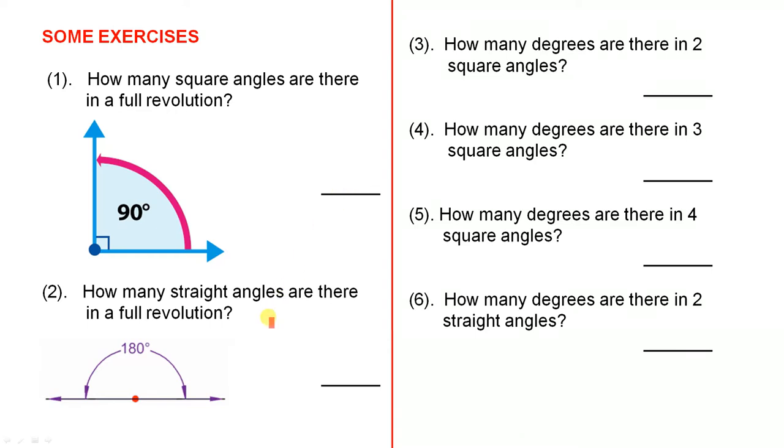How many straight angles are there in a full revolution? You know that a straight angle has 180 degrees. You know that a full revolution is 360. That enables you to answer that.